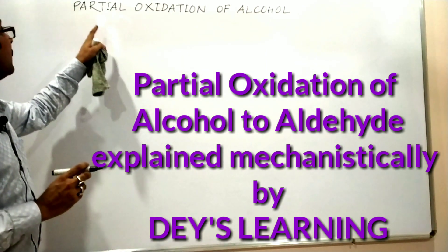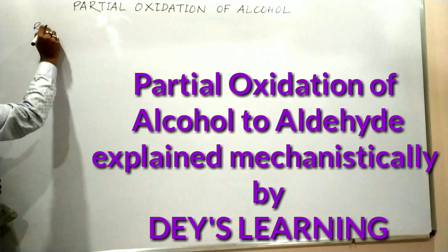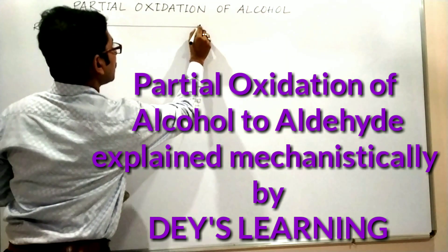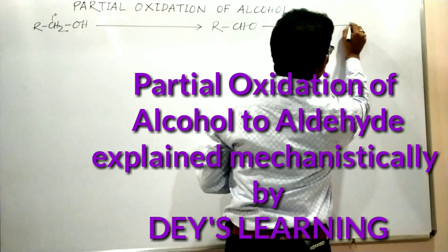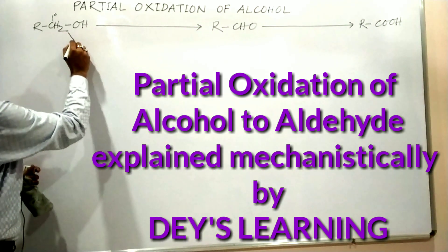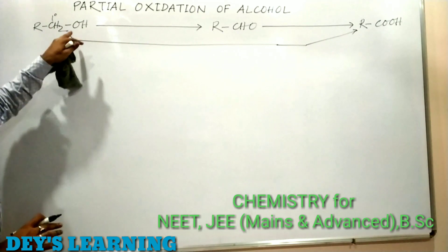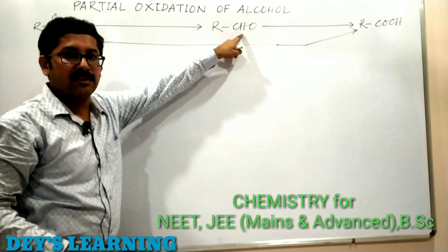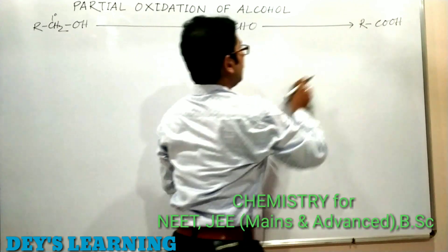Today's lesson is partial oxidation of alcohol. If we have a primary alcohol molecule and we oxidize it, we get an aldehyde. If we oxidize further, we get a carboxylic acid. The oxidation of a primary alcohol to carboxylic acid is known as complete oxidation, and the oxidation of a primary alcohol to aldehyde is known as partial oxidation.